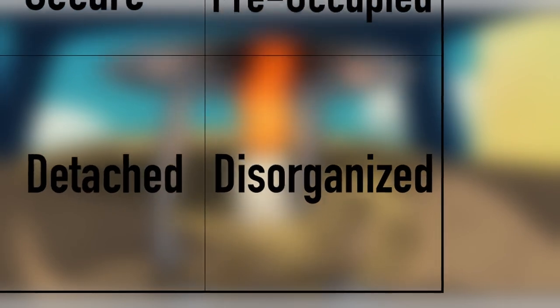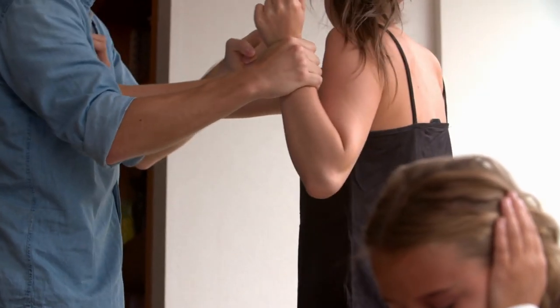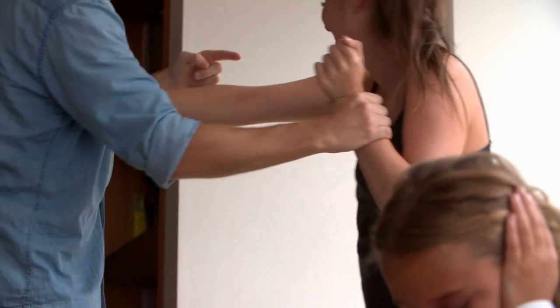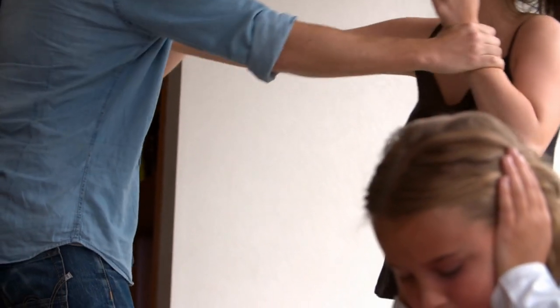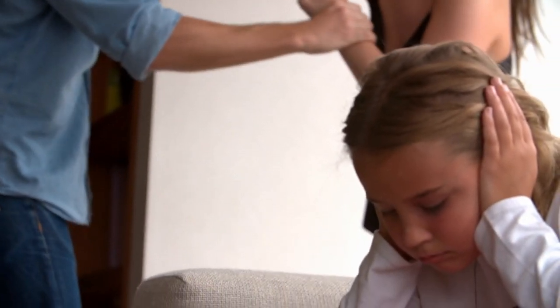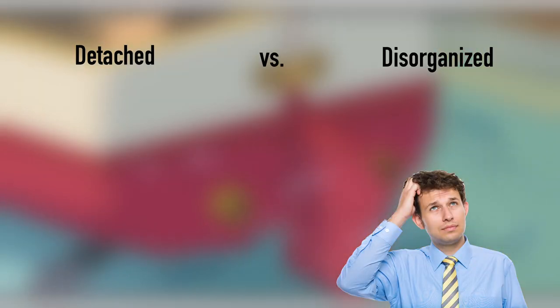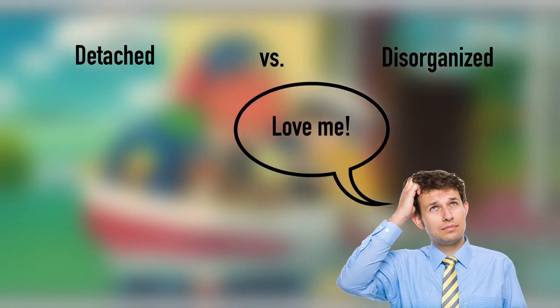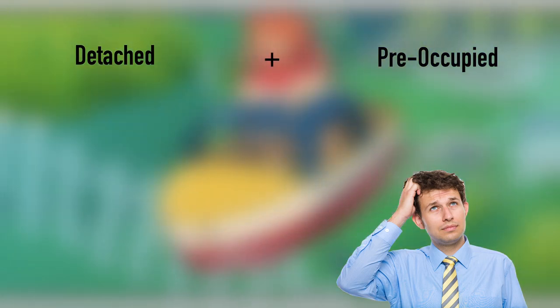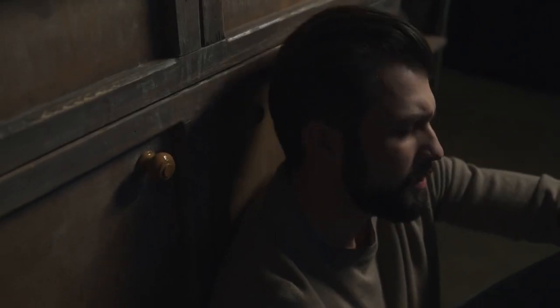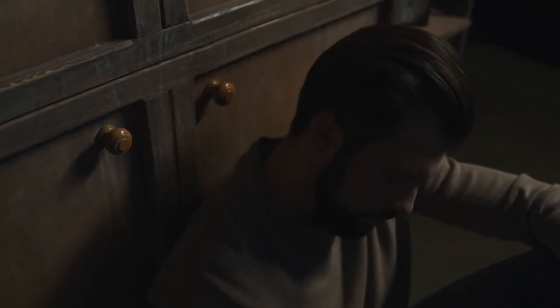The last insecure attachment style is disorganized — the most detrimental — and results from parents who are abusive towards their children. The caregiver, who is supposed to be a source of safety and love, becomes a source of fear. These negative childhood experiences result in adults with inconsistent attachment behaviors. Adults with a disorganized attachment style may lack the ability to trust others, creating barriers to genuine connection. However, what differentiates disorganized adults from detached is that they desperately seek genuine connection, yet they're too afraid and untrusting to develop the connections they so desperately crave.